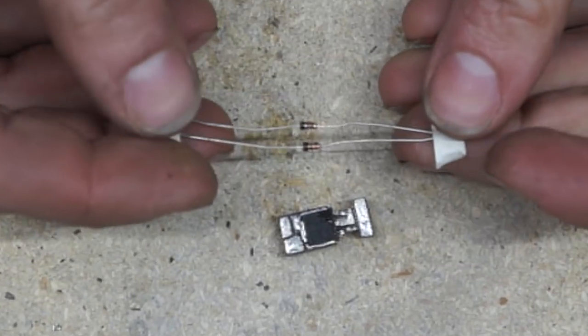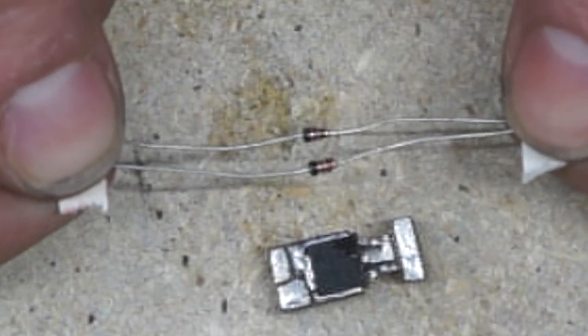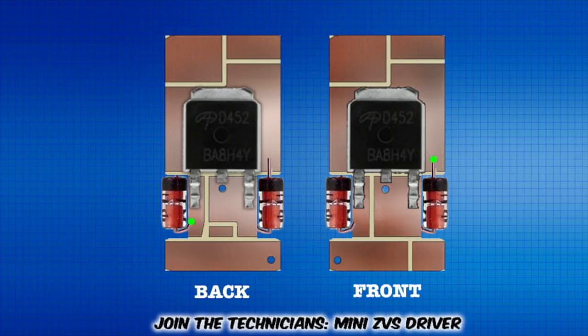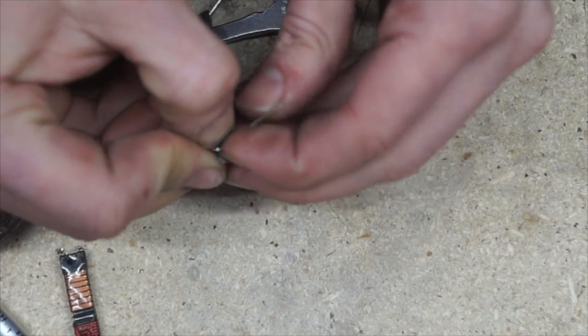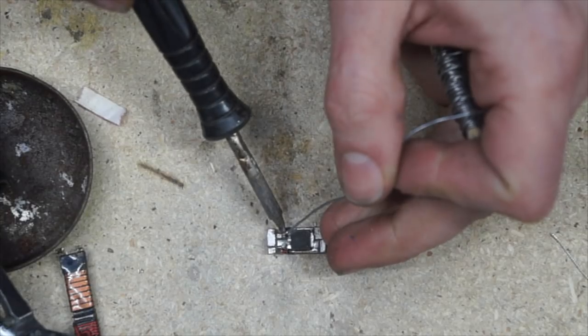These diodes are 1N4148s. They can be any high-speed diode that's good for at least 25 volts at at least 300 milli-amps. The first diode goes here. It connects the gate of the back MOSFET to the drain of the front MOSFET. The second diode goes here. It's a little hard to see, but I'm fitting these diodes right into the notches cut into the circuit board. Each diode connects the gate of the MOSFET on one side to the drain of the MOSFET on the other.